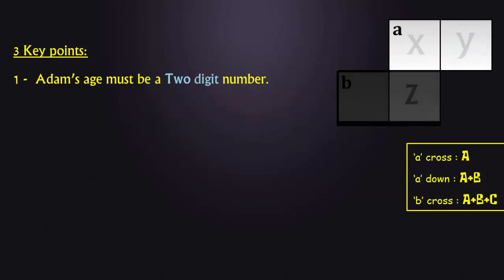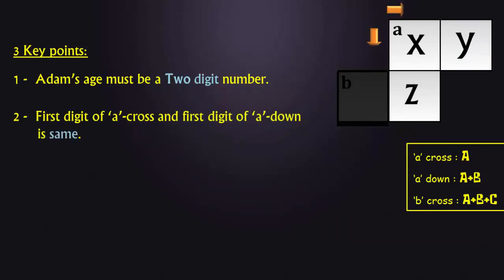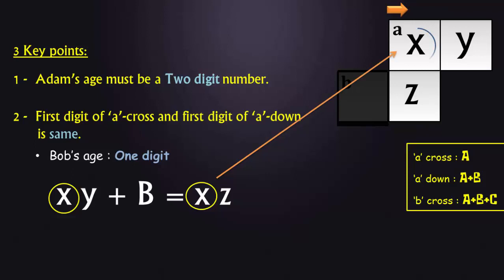Key point number 2. The first digit of A cross and the first digit of A down has to be the same, because this block is common between them. A cross is Adam's age which is a two digit number. Then Bob's age has to be a single digit number, because the addition of Adam's age and Bob's age should have the first digit value same as the first digit value of Adam's age.